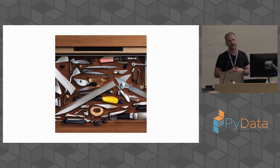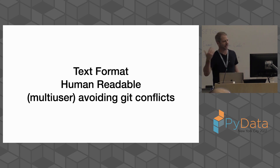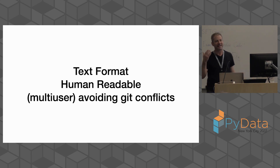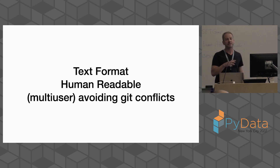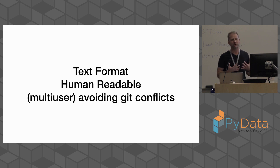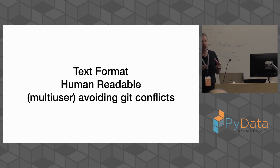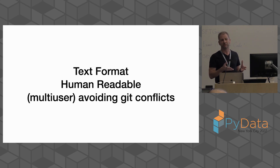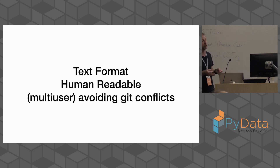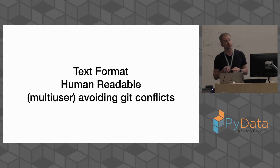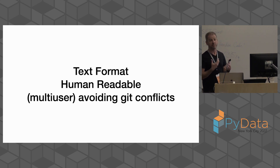Anything in your data science workload that you want Git to help you with has got to be in a nice text-based format — and that format usually has to be human-readable too. Because when things go wrong and you have multiple people using that Git repository, you're going to have to resolve conflicts, and you've got to figure out what's going on. One example of a format that is technically text but not particularly useful in Git is the Jupyter notebook. There are more than a few challenges to getting Jupyter Notebooks to work nicely with Git. Lots of people have done good thinking about it, but think carefully when using Git as your version control mainstay.